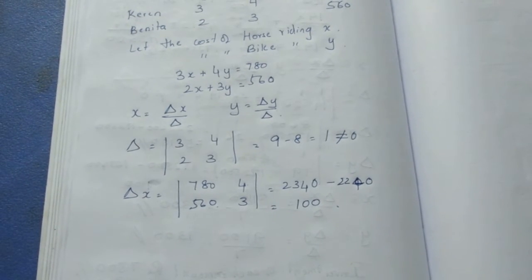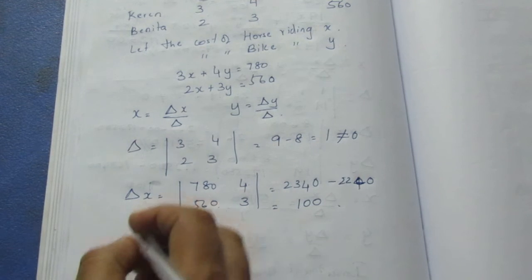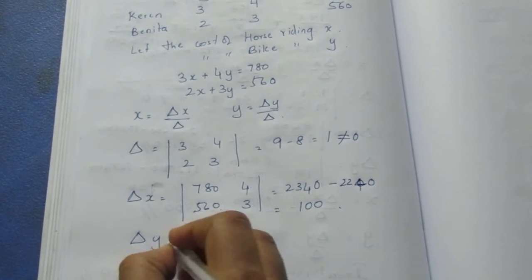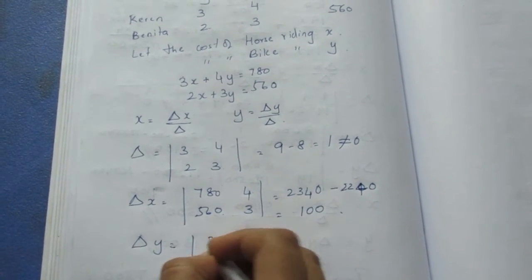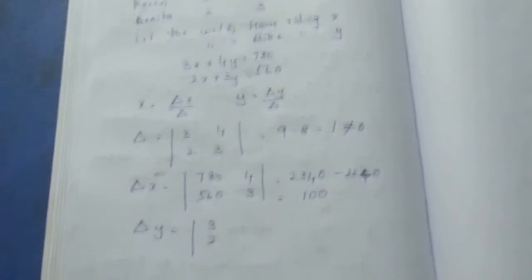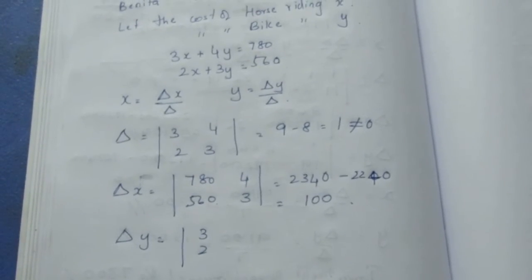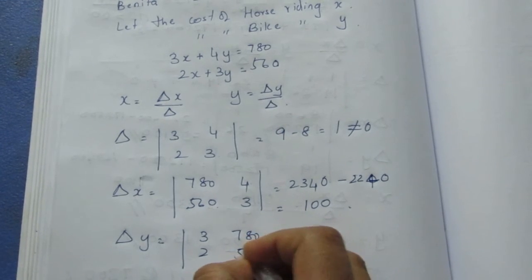Now for determinant y. For determinant y, we need x coefficient values: 3, 780 in the first row; 2, 560 in the second row.